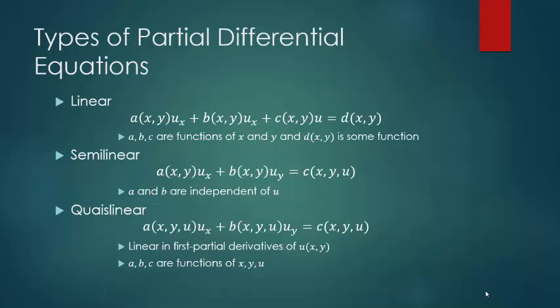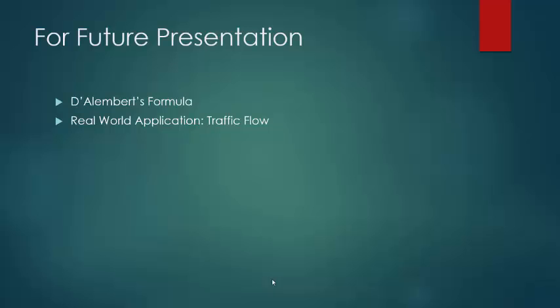That was finding the characteristic equations for the wave equation, but you can find characteristic equations for all different kinds of partial differential equations — linear, semi-linear, and quasi-linear, which are three different types shown here. The process of manipulating the differential equation may differ, but essentially you can do the same thing. For further studies, you could look into d'Alembert's formula, which creates a general form of the wave equation showing how characteristics act in different situations. A real-world application of the method of characteristics is modeling traffic flow problems.